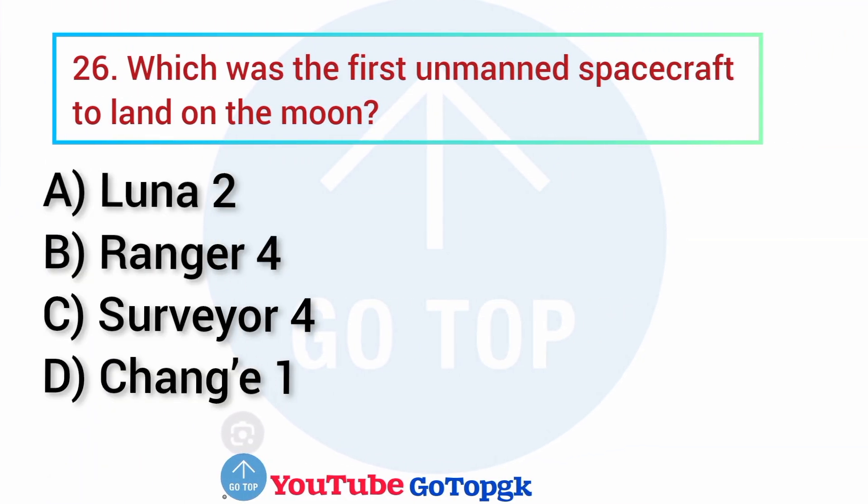Question No. 26. Which was the first unmanned spacecraft to land on the moon? Options: A. Luna 2, B. Ranger 4, C. Surveyor 4, D. Change 1. Your correct answer is option A: Luna 2.